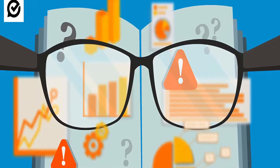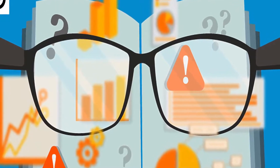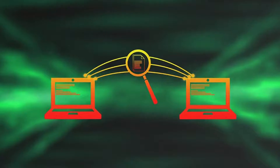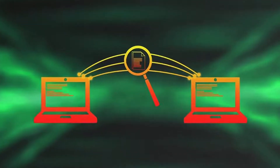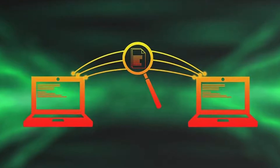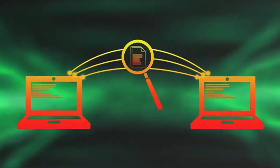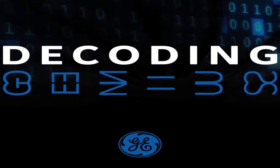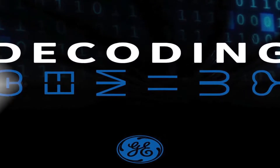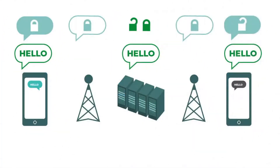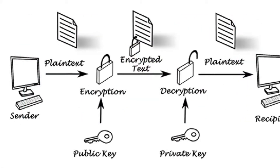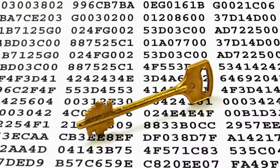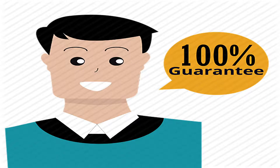At the simplest level, encryption prevents other people from reading the data. In the event that someone intercepts a data transmission and manages to deceive any user identification scheme, the data that they see does not make sense without a way to decode it. Encryption technologies can also help to establish the identity of users, control approved transmission or forwarding of data, control unapproved transmission or forwarding of data, and guarantee that users take responsibility for data that they have transmitted.